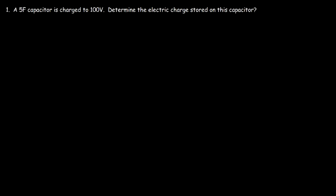In this video, we're going to focus on solving some basic problems associated with parallel plate capacitors. So let's focus on this one. A 5-farad capacitor is charged to 100 volts. Determine the electric charge stored on this capacitor. The formula that we need is Q — the electric charge — is equal to the capacitance multiplied by the voltage.